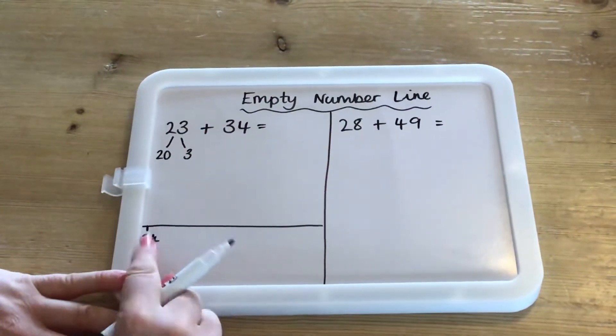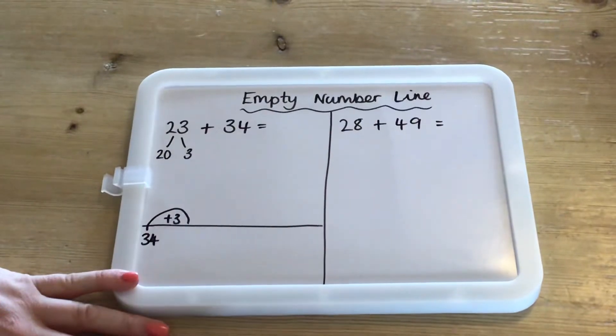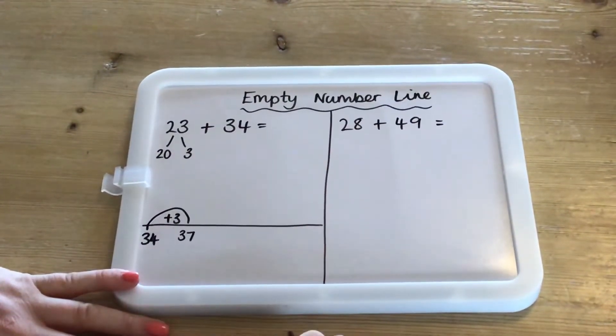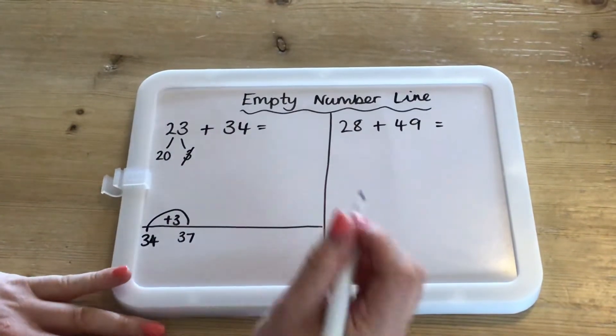You're then going to add your ones first, so 34, do a jump and add 3 and we know that that is 37. Once we've done that, we can cross that out so that we know that we don't have to do it again.